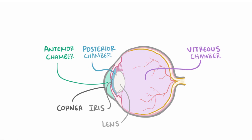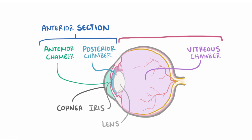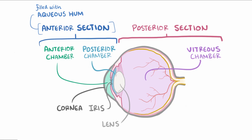The posterior chamber is a narrow space between the iris and the lens, and then the larger vitreous chamber includes the space between the lens and the back of the eye. Both the anterior and posterior chambers are located within the anterior section of the eye, while the vitreous chamber is part of the posterior section. Each chamber is filled with fluid — the anterior section with aqueous humor and the posterior section with vitreous humor.